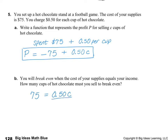So if we divide out the $0.50 per cup and solve for that, then we'll be able to find our answer. So $75 divided by $0.50 — let's talk about this for a minute. $0.50 is the same as half of a dollar. So I'm going to change this to a fraction, because fractions are a lot easier to work with than decimals.